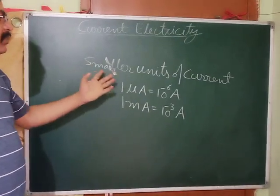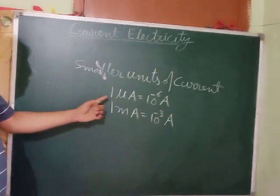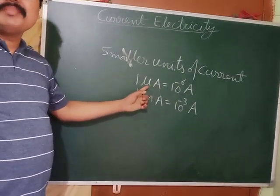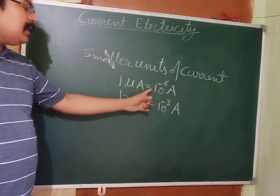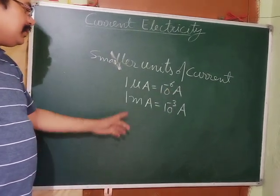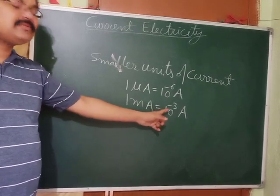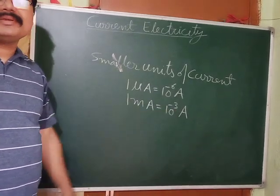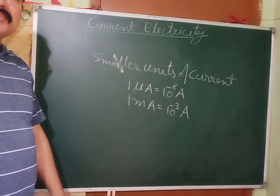Some smaller units of current: 1 microampere equals 10 to the power minus 6 ampere; 1 milliampere equals 10 to the power minus 3 ampere.